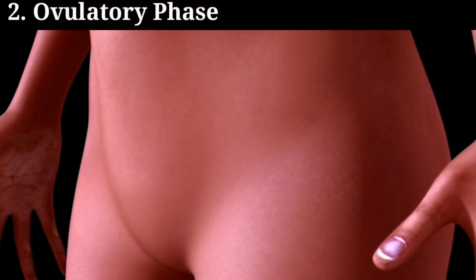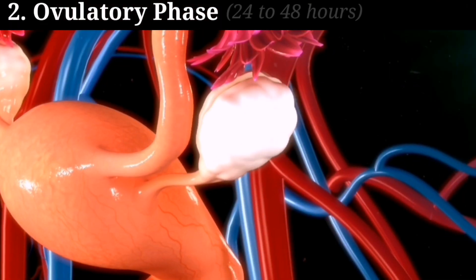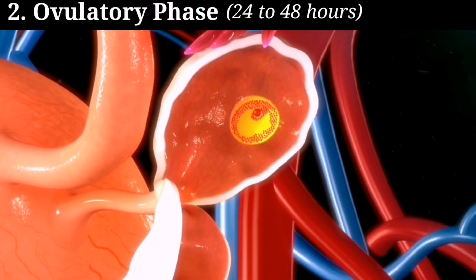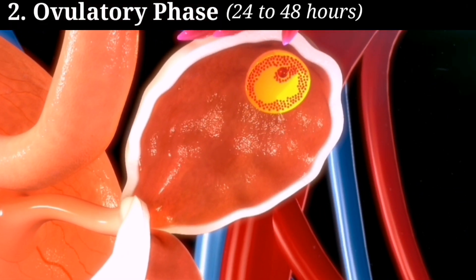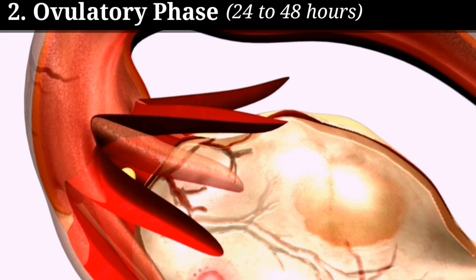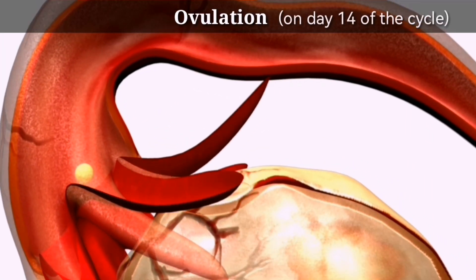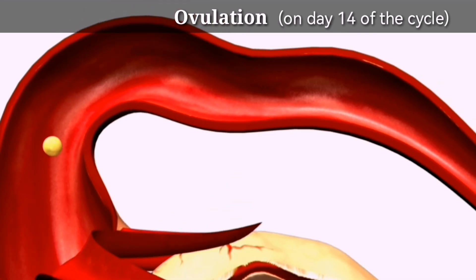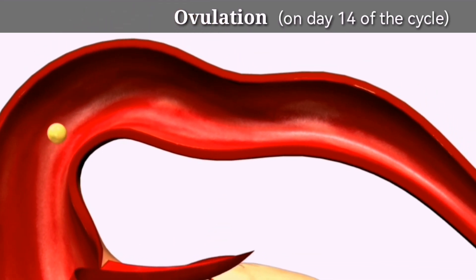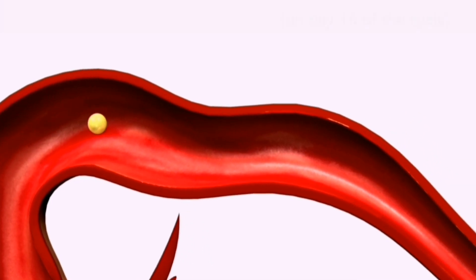The ovulatory phase is the second stage and lasts for around 24 to 48 hours. During this phase, an egg is released from one of the ovaries and travels down the fallopian tube towards the uterus. This is the phase where conception can occur.